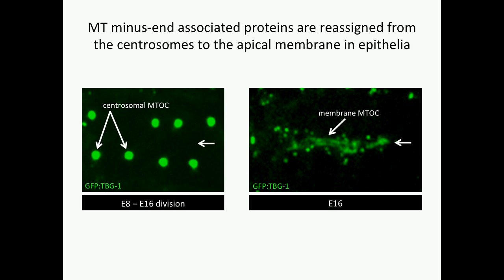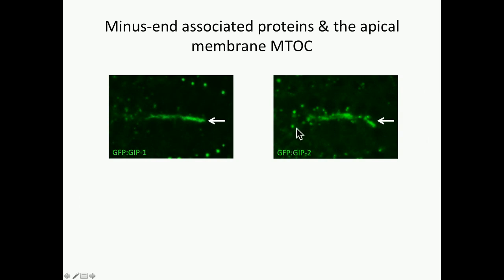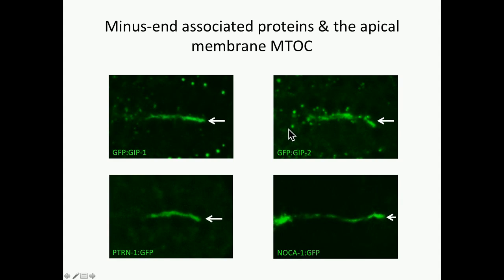These minus-end-associated proteins are frequently moved in coordination with the reassignment of MTOC function. In this left image, you can see a fusion protein of gamma-tubulin localized to the centrosomes in the early dividing intestine, but after polarization here on the right at E16, we see the majority of that gamma-tubulin redistributed to the apical membrane. A similar pattern of redistribution is seen for the gamma-TuSC interacting partners GIP1 and GIP2. And despite not seeing centrosomal localization of Patronin and NOCA1, we do see at polarization that they localize to the apical membrane, just like the gamma-TuSC proteins.